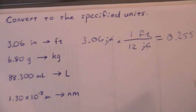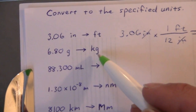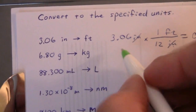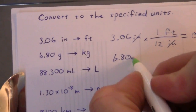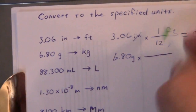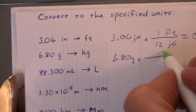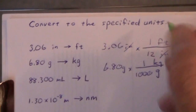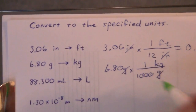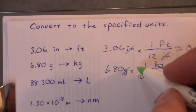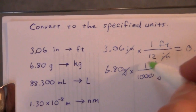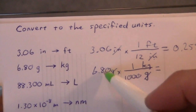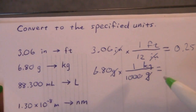Next: 6.80 grams to kilograms. In each of these we want a conversion between those units. 6.80 grams times how many grams per kilogram — we're going to have grams on the bottom and kilograms on top. There are 1,000 grams per kilogram. You could also say 10 to the minus 3, or 0.001 kilograms is one gram. Mathematically that will come out to be the same thing.